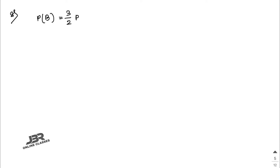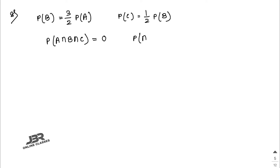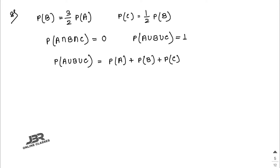Sum number eight: A, B, C are three mutually exclusive and exhaustive events associated with a random experiment. Find P(A), given that P(B) = (3/2)P(A) and P(C) = (1/2)P(B). Since they are mutually exclusive and exhaustive, P(A) + P(B) + P(C) = 1.